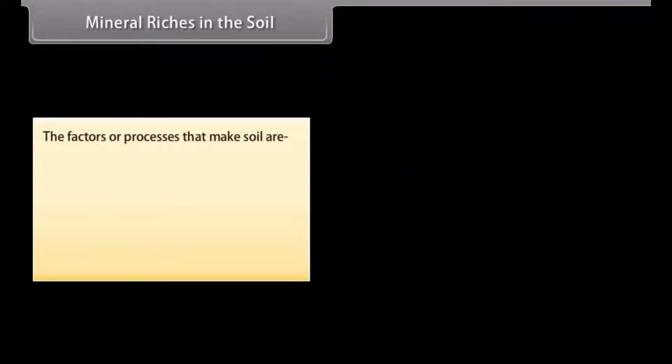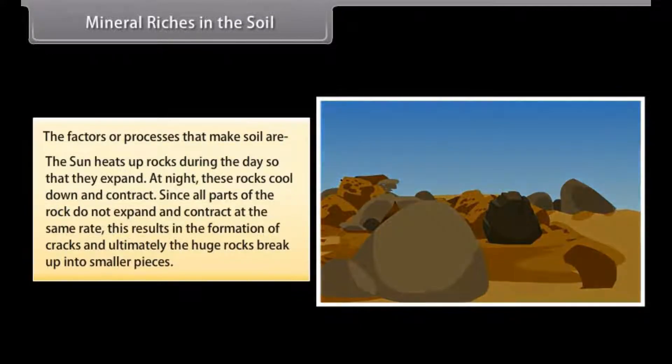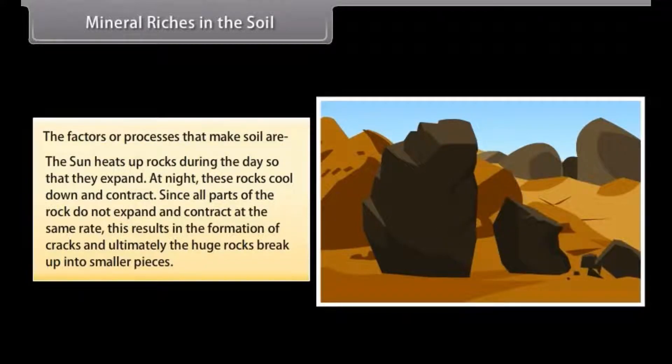The factors or processes that make soil are: The sun heats up rocks during the day so that they expand. At night, these rocks cool down and contract. Since all parts of the rock do not expand and contract at the same rate, this results in the formation of cracks and ultimately the huge rocks break up into smaller pieces.